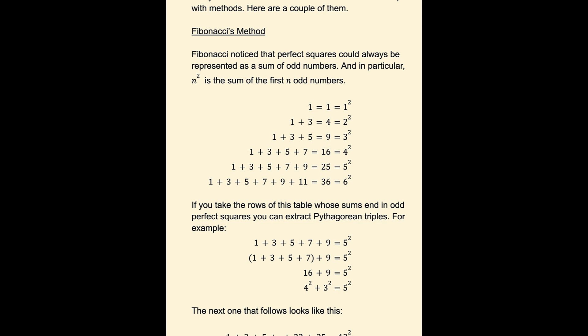You have 1 plus 3 plus 5 plus 7, and then plus 9. Now the first 4 add up to 16, which is a perfect square.